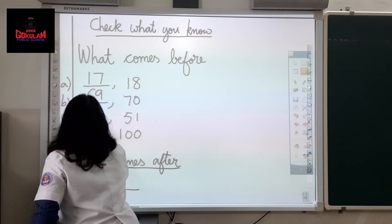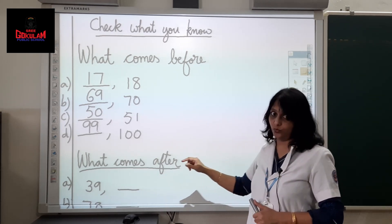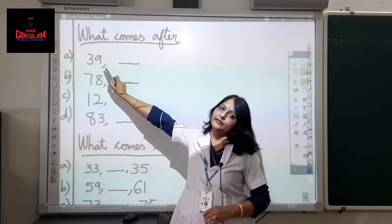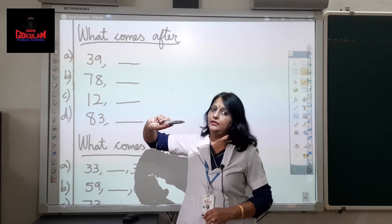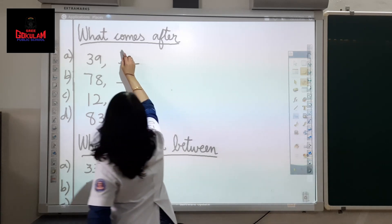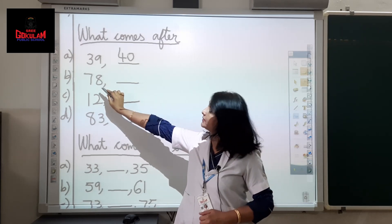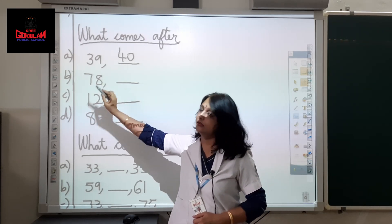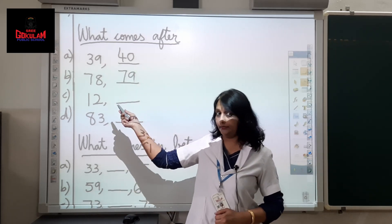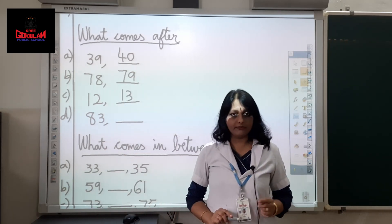Now let us discuss about numbers that come after. What is this number? 39. Which number comes after 39? 40. Which number comes after 78? 79. What comes after 12? Yes, 13.